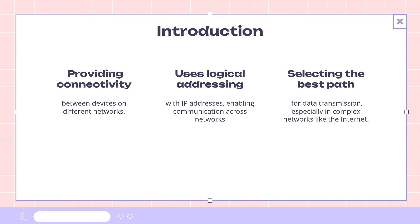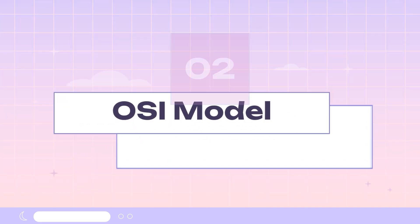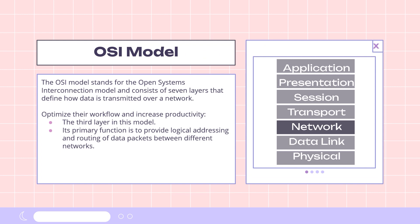Before we jump into Layer 3, let's quickly review the OSI model. The OSI model stands for the Open Systems Interconnection model and consists of seven layers that define how data is transmitted over a network. The network layer, also known as Layer 3, is the third layer in this model. Its primary function is to provide logical addressing and routing of data packets between different networks. Think of it as the traffic cop of the networking world, directing data to its proper destination.